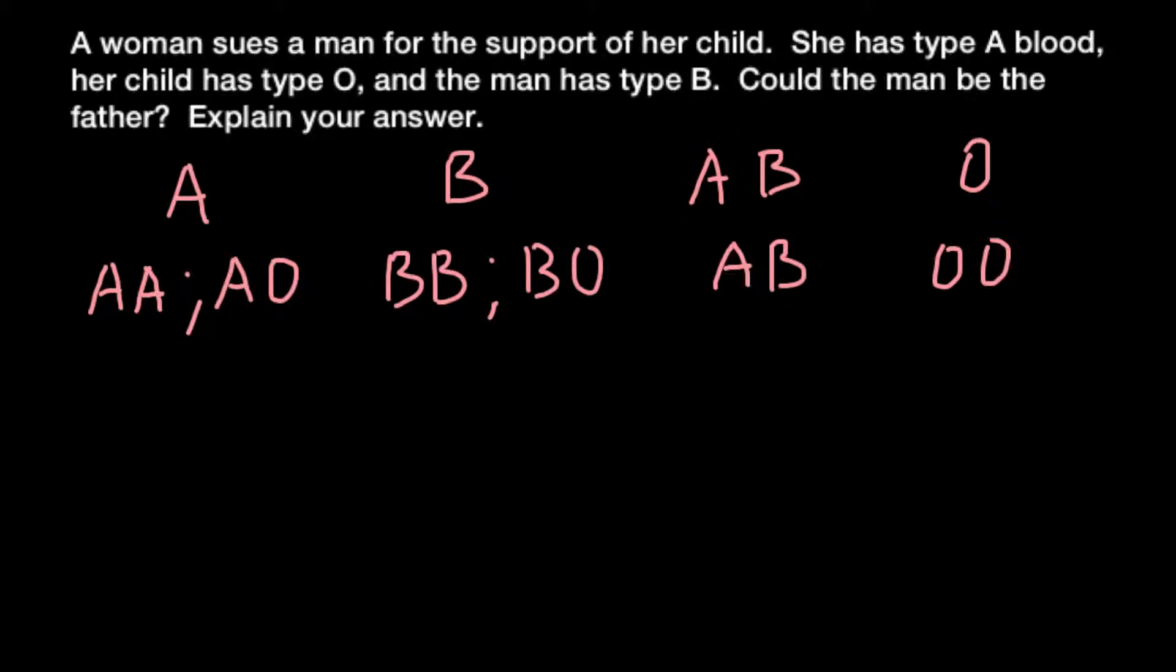So that's why blood group O is made by this genotype O, O. Because this allele is recessive, we need two alleles to make this blood group. So now we can solve this problem.